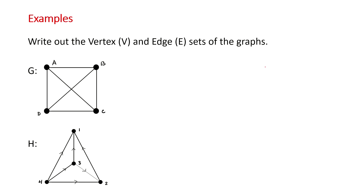Now for an example: suppose you have two graphs and you want to pull out the vertex and edge sets for each. For graph G, the vertex set is simply the names of the vertices: {a, b, c, d}. For the edges, I'll start at vertex a to be strategic. We have edges a–b, a–c, and a–d — that's three of our six edges.